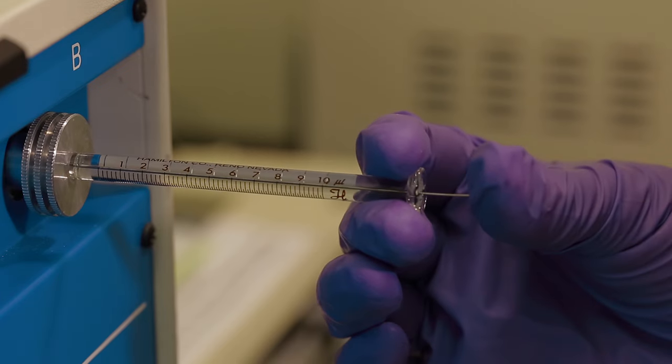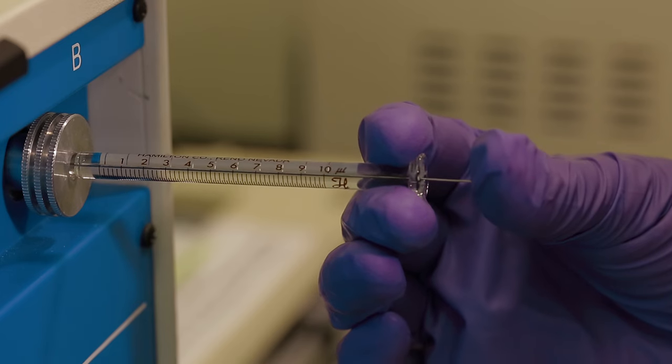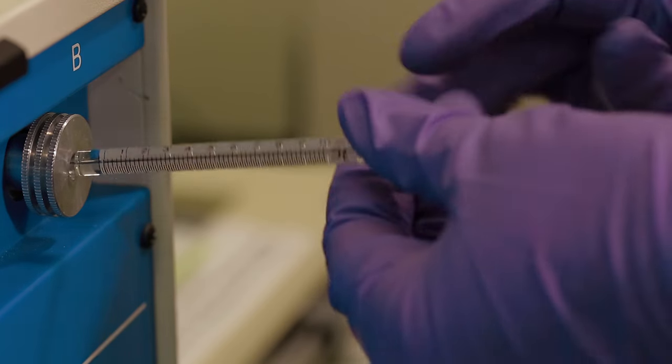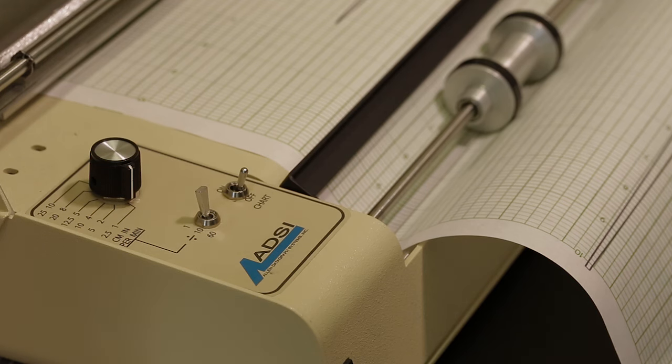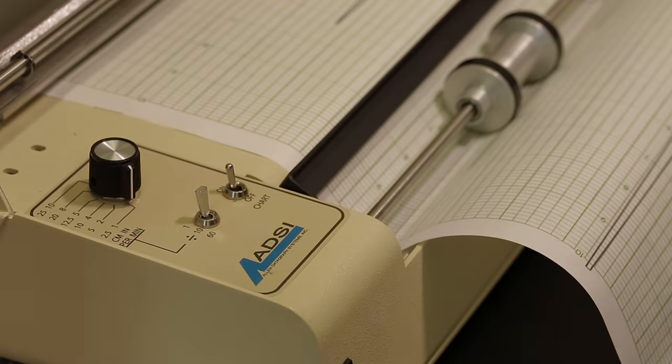When you inject your sample, make sure to promptly plunge the syringe without bending it. It is necessary to ensure that the entirety of the sample is injected at one time. At the same time you inject the sample, turn on the chart recorder.